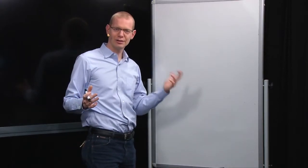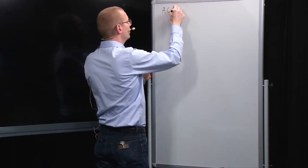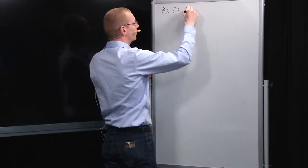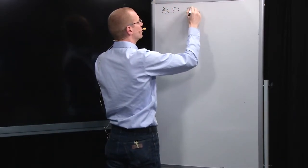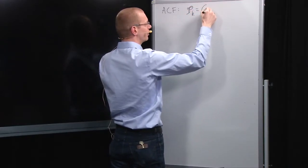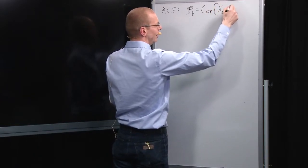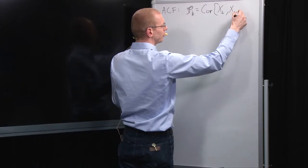A small note on the autocorrelation and the partial autocorrelation function. Let's first define the ACF as rho k, which is the correlation between x at time t and x at time t plus k.